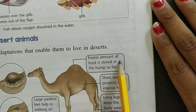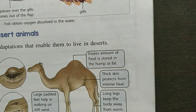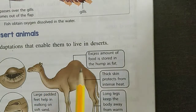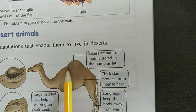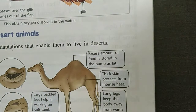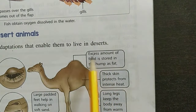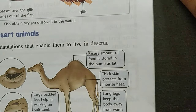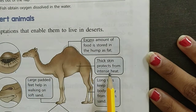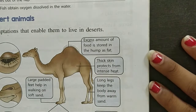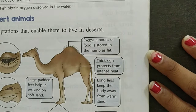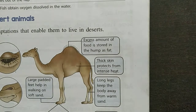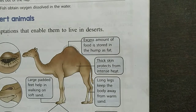The hump stores an excess amount of food as fat. Dekho — hemare body mein fat present hota hai ek. To look — camel has a dome-shaped hump. Actually, what does it mean? It is an excess amount of food stored as fat in this hump. The skin protects from intense heat. Intense heat means — desert mein, summer season mein, it is very warm, so the skin protects the camel from that intense heat.